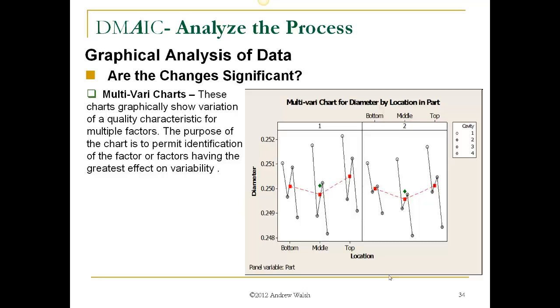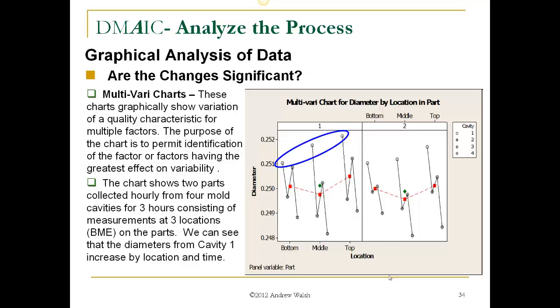Multi-vari charts. These are charts that graphically show variation of our quality characteristics for multiple factors. The purpose of the chart is to permit identification of the factor or factors having the greatest effect on the variability. So the chart on the right shows two parts collected hourly from four mold cavities for three hours, consisting of measurements at three locations, beginning, middle, and end on the parts. We can see that the diameters from cavity one are increasing by location and time in this plot. Minitab can display one Y's response and up to four X variables on the chart.